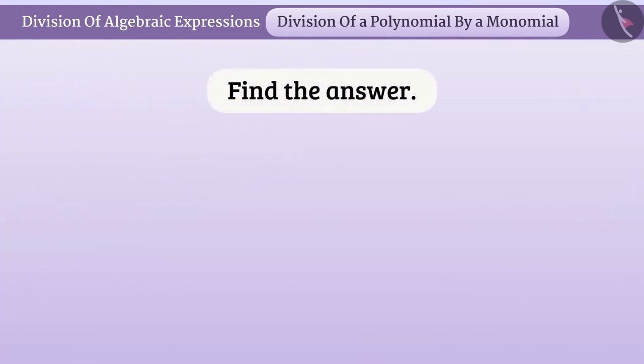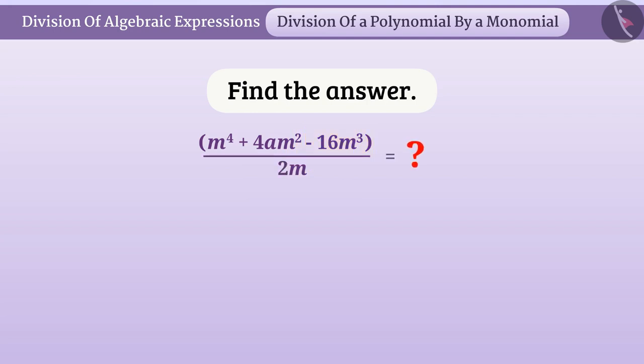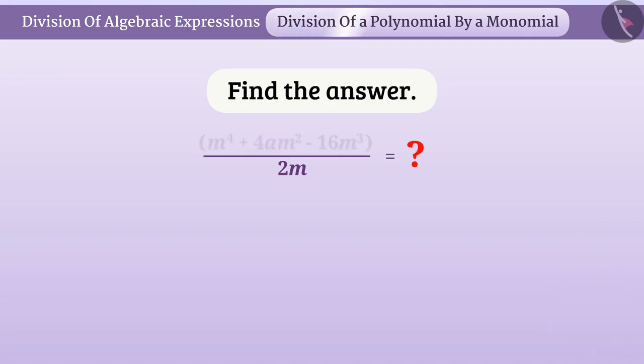Now find the result of the given division yourself: m to the power 4 plus 4am squared minus 16m cubed, all divided by 2m. Now you will be able to divide any polynomial with a monomial.